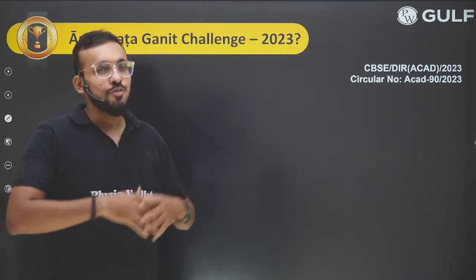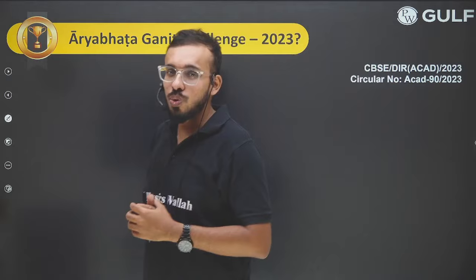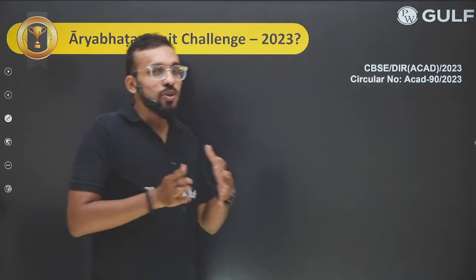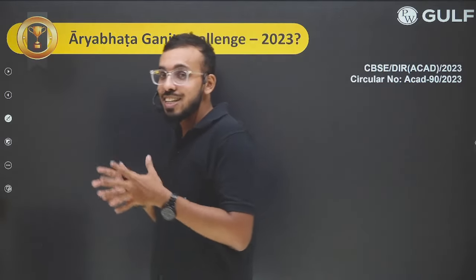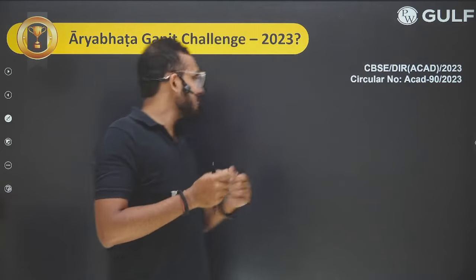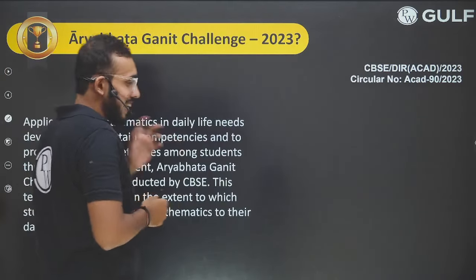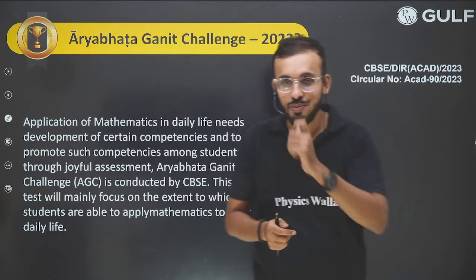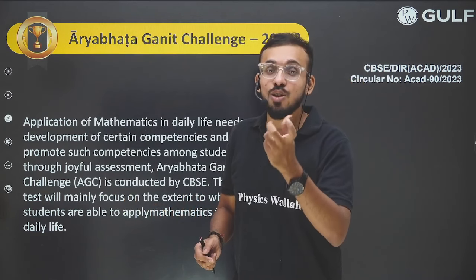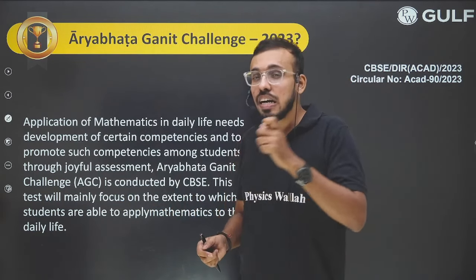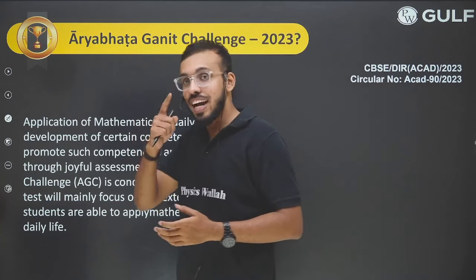Aryabhatta was a great scientist in the fifth century — one of the greatest mathematicians. He was the man who discovered zero, found out the value of pi, and also stated that pi is an irrational number. That was later proved in the 17th century, but Aryabhatta stated it in the fifth century itself.